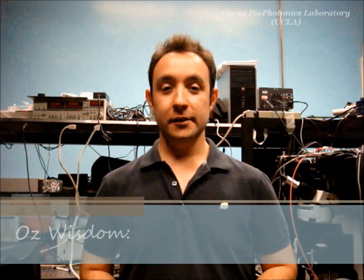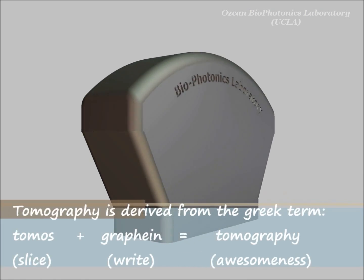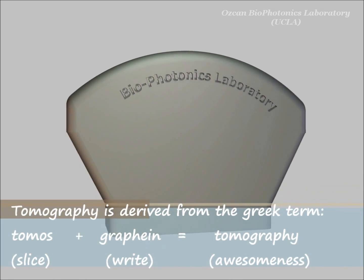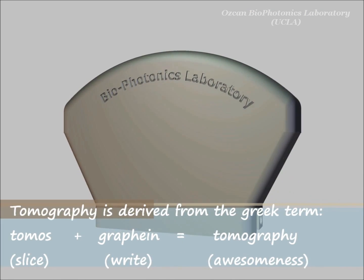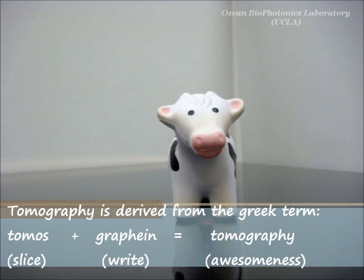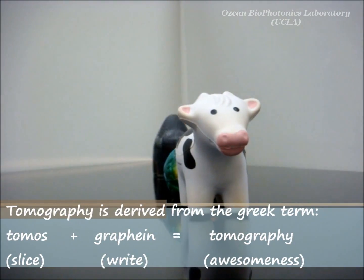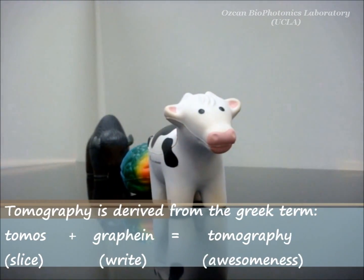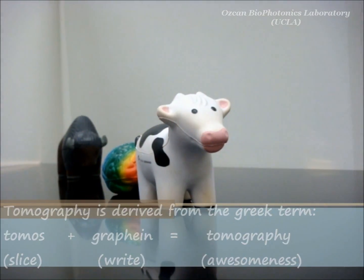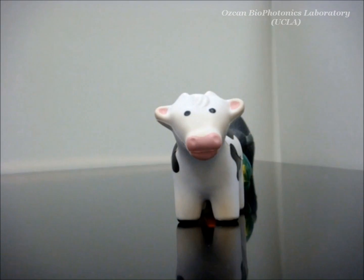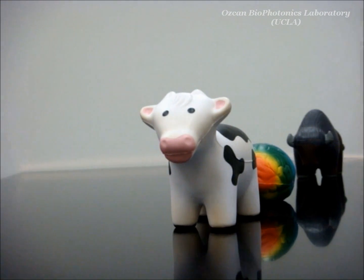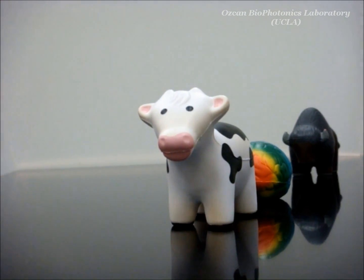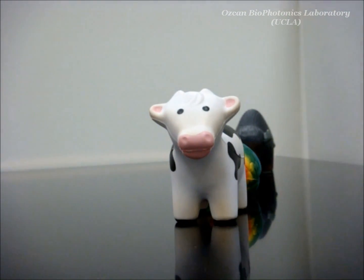Tomography, in general, refers to a set of techniques that aim to obtain three-dimensional structural information regarding objects. A common way of doing this is to look at the same object from different directions, which gives you more information about how the object looks, and that can be converted to a three-dimensional image.